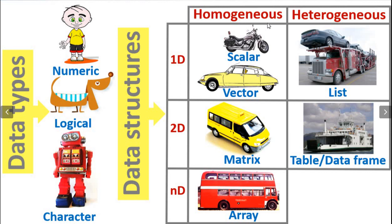Homogeneous data structures can only store a single type of data, such as numeric, logical, and character. Heterogeneous data structures can store more than one type of data at the same time. As I explained in the last video, scalar, vector, matrix, and array can only accept a single data type — for example, like a car, minivan, or bus that only accepts humans, animals, or robots. A minivan cannot accept a motorcycle or a car inside it, and similarly an array cannot accept a minivan.